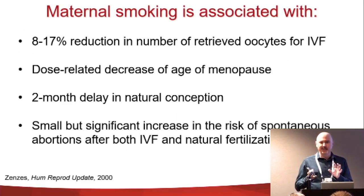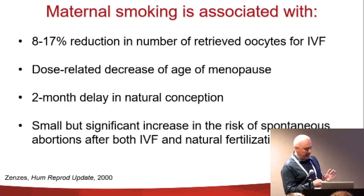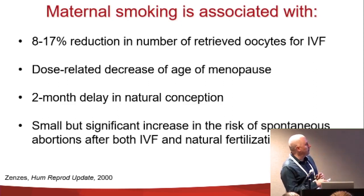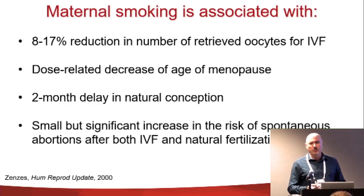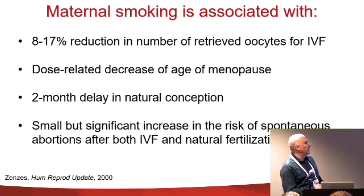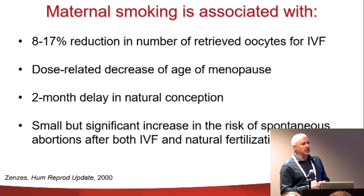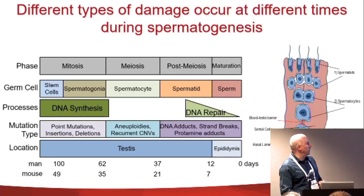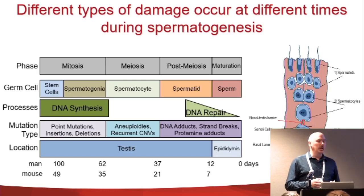I'm going to cover a couple of slides on female germ cells, summarizing some of the evidence we have on the impact of tobacco smoking on the female germ line. We know that maternal smoking is associated with a reduction in the number of oocytes retrieved when women go for in vitro fertilization. There is a dose-related decrease in age of menopause, at least a two-month delay in natural conceptions, and a significant increase in spontaneous abortions affecting both IVF and natural fertilization.